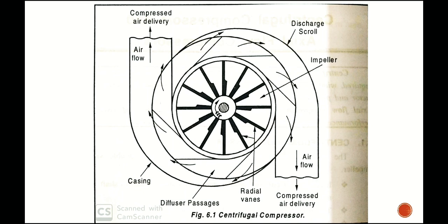Now for how the centrifugal compressor works: air enters the eye of the impeller, that is the center portion of the impeller. Due to the centrifugal action of the impeller, the air moves radially outwards along the impeller vanes.